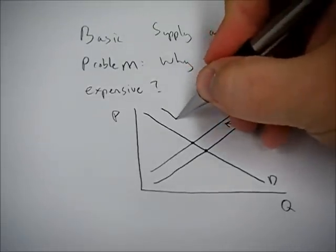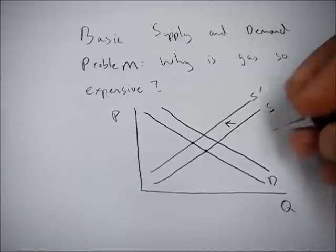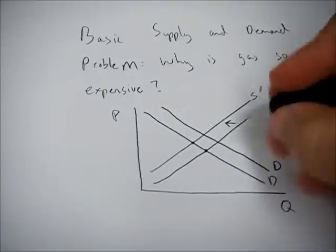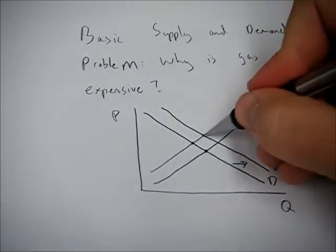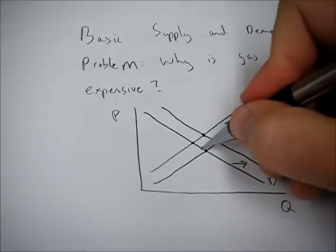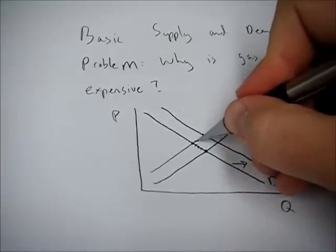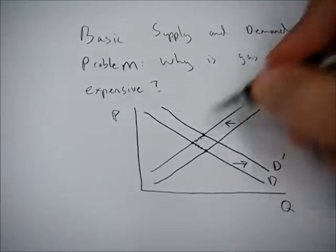So by having more buyers in the system, that's going to shift demand right. So now we have this leftward shift in supply and this rightward shift in demand. We see equilibrium price go up yet again.